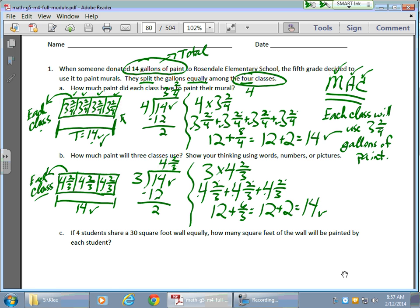There I am. 14, 14. Total being 14. So in this case, each class will use four and two-thirds gallons of paint. Okay, so that's the deal. All right folks, thanks so much. Take care.